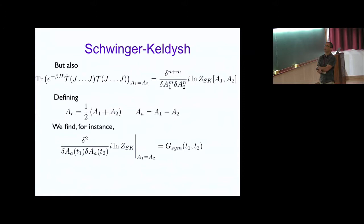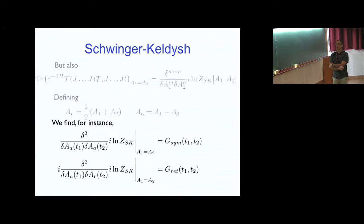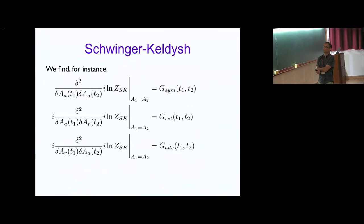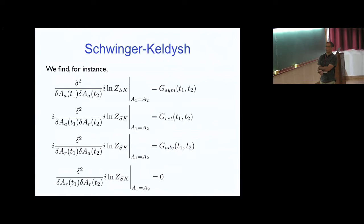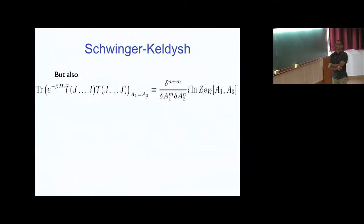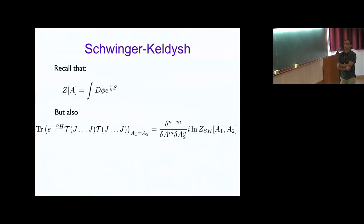Instead of working with source one and two, one often works with their sum and difference. Varying with respect to the difference gives the symmetric Green's function; varying with respect to sum and difference gives the retarded or advanced Green's function. Importantly, variation with respect to two average-type (r-type) sources gives zero — this is actually quite important in what follows and I'll explain in detail why one gets zero here.